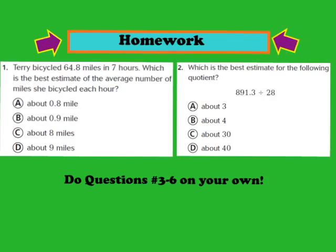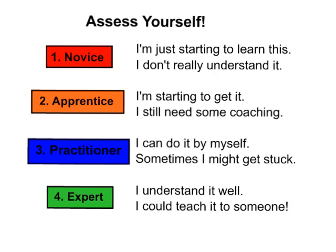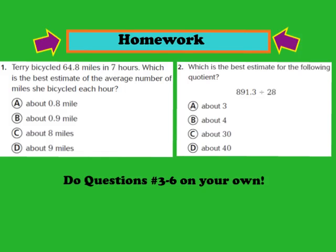For tonight's homework, please complete questions 1 and 2, as well as numbers 3 through 6, found in your GoMath workbook on page 106. Don't forget to assess yourself: are you a 1 novice, 2 apprentice, 3 practitioner, or 4 expert? Record your number on your workbook page. We hope you have a great evening, and we look forward to seeing you tomorrow in class. Thank you.